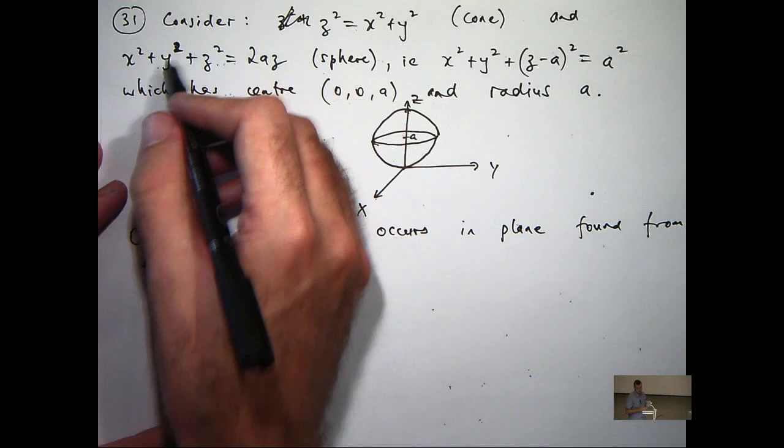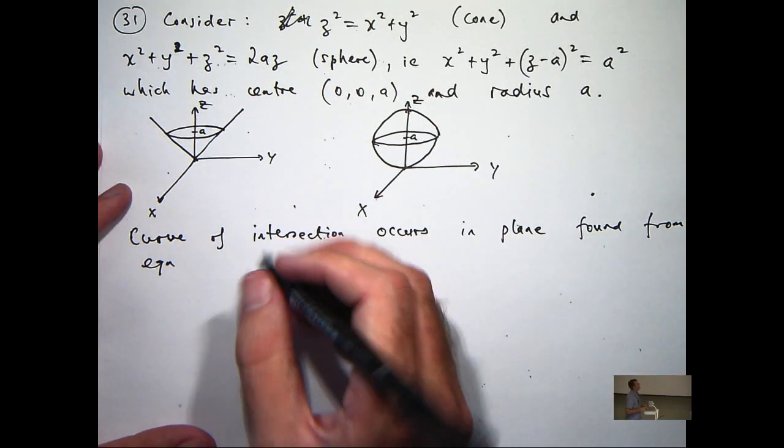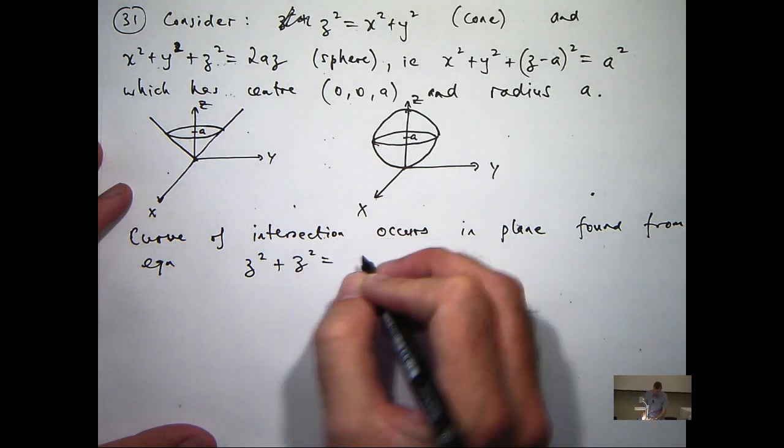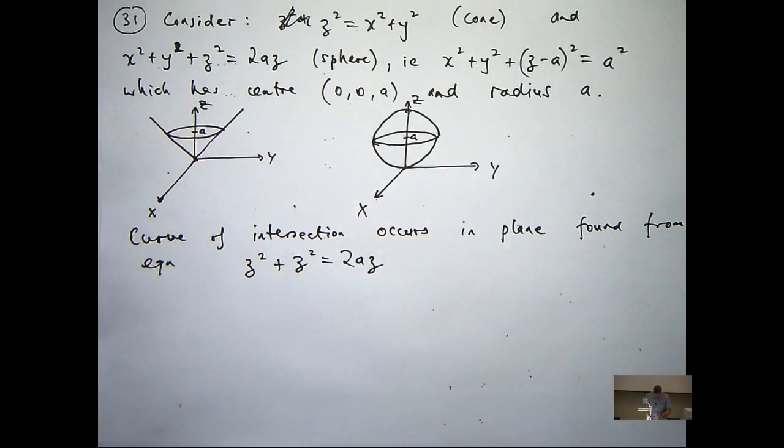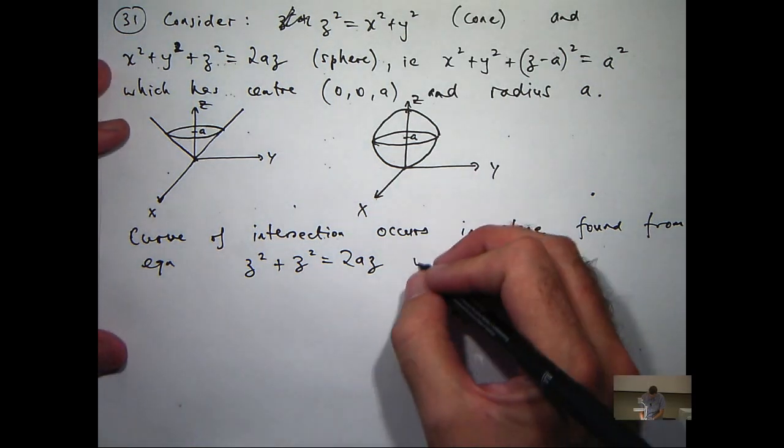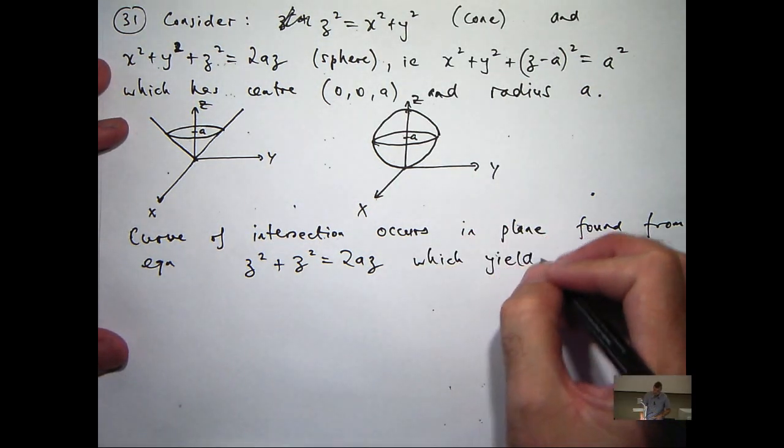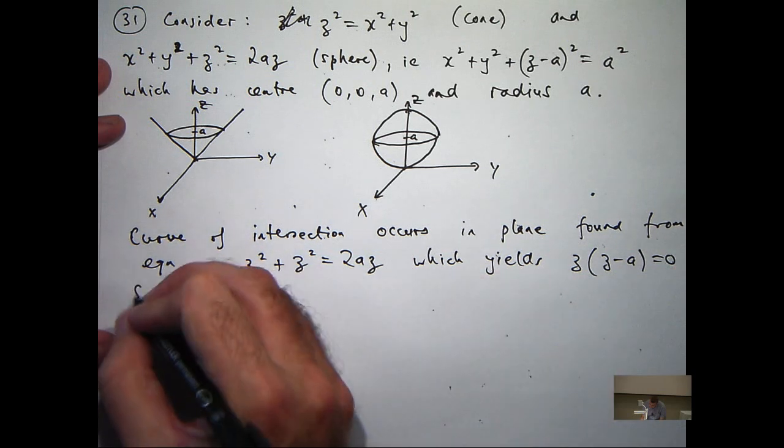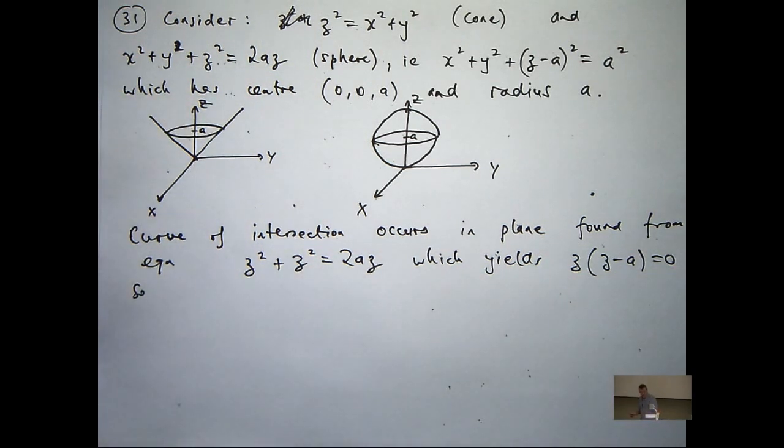So x squared plus y squared into that will be... so I can factorize that. Get rid of the two, so our two planes of intersection are the xy plane, z equals zero, and the plane z equals A.